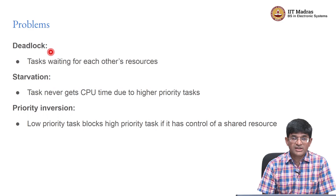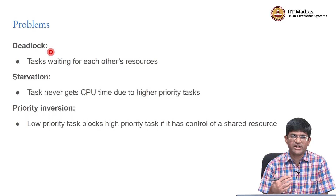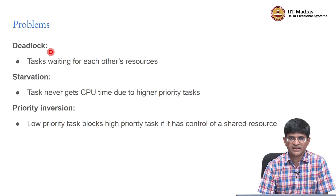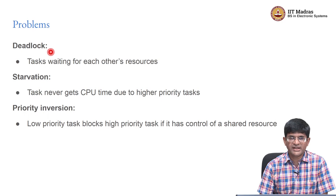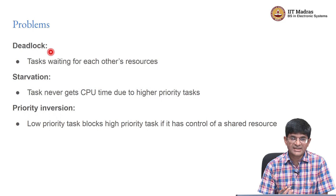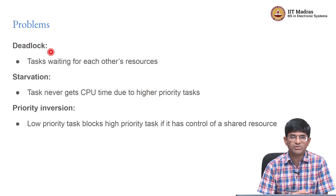There is also another possibility called starvation, which especially affects low priority tasks. In starvation, high priority tasks are always taking up the CPU, so a low priority task never gets to run at all. This could be because priority settings are wrong, high priority tasks are taking too long to execute, or simply because the CPU chosen is not powerful enough for the system — it cannot finish the high priority tasks fast enough to manage the low priority ones.